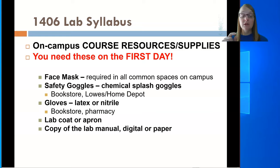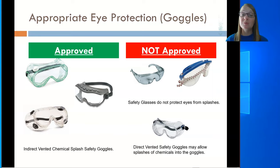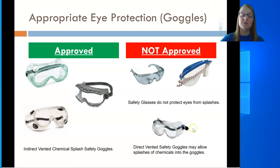You're going to need safety goggles — specifically indirectly vented chemical splash goggles. On the left-hand side of this slide, you can see the approved versions: they have vents, but the vents are covered, making it more difficult for chemicals to reach your eyes. You cannot use safety glasses that don't contact your face all the way around. The goggles on the bottom of the slide look similar but have open holes on the side — those are directly vented and not acceptable, as chemicals can easily get to your eyes and cause damage.